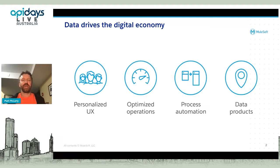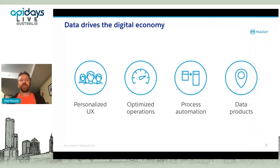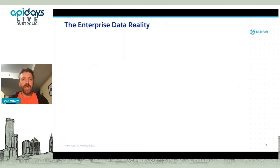If you look at all these initiatives companies are pursuing under the umbrella term 'digital transformation' — personalized user experiences, optimized operations through process mining, process automation, and even launching data products and data-driven decision making — data is everywhere. Software is what's needed to marshal that data. But the reality for a lot of organizations is they're just not there yet, because we've spent a lot of time in the IT community focusing on software practices and software engineering.